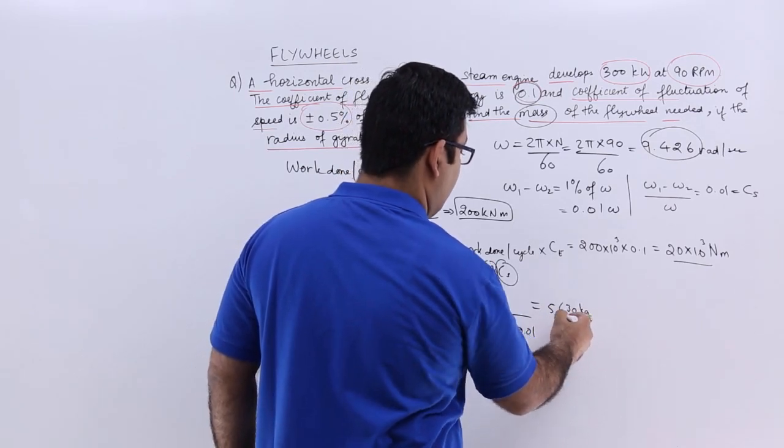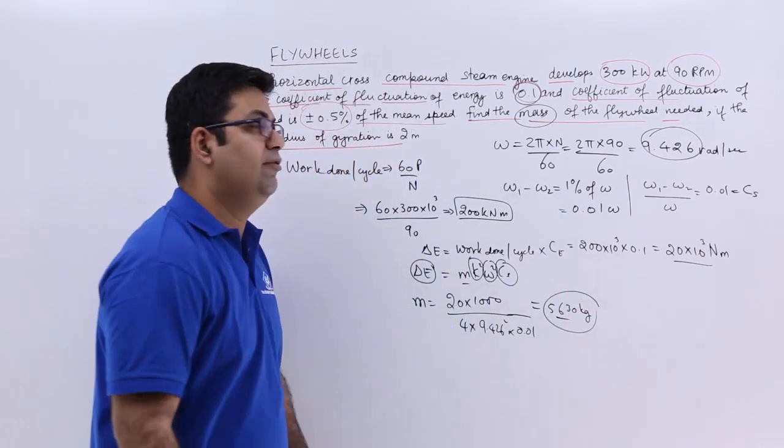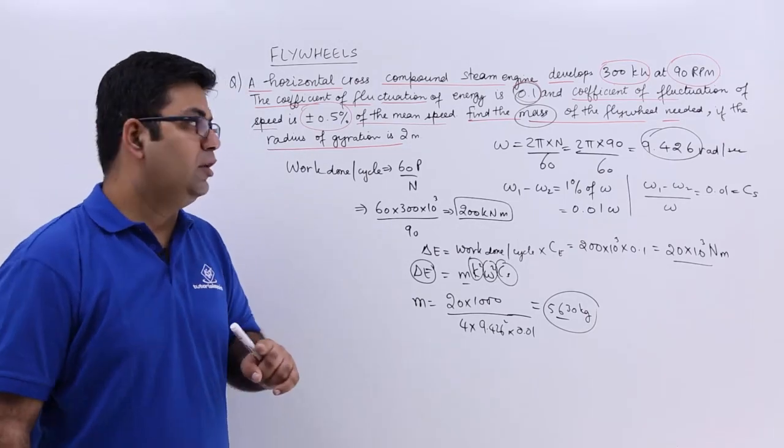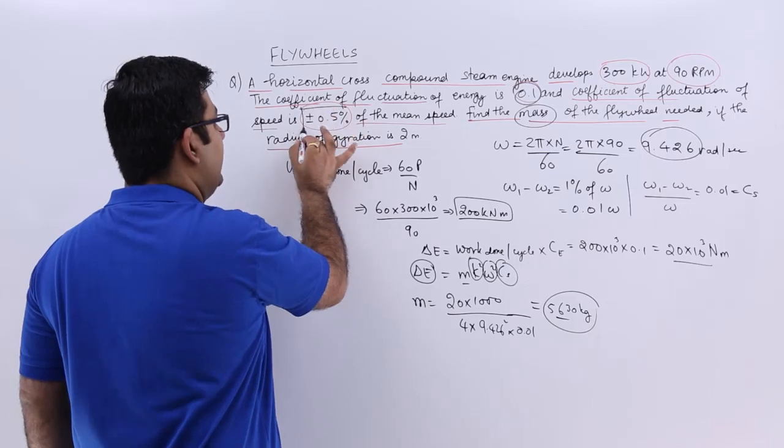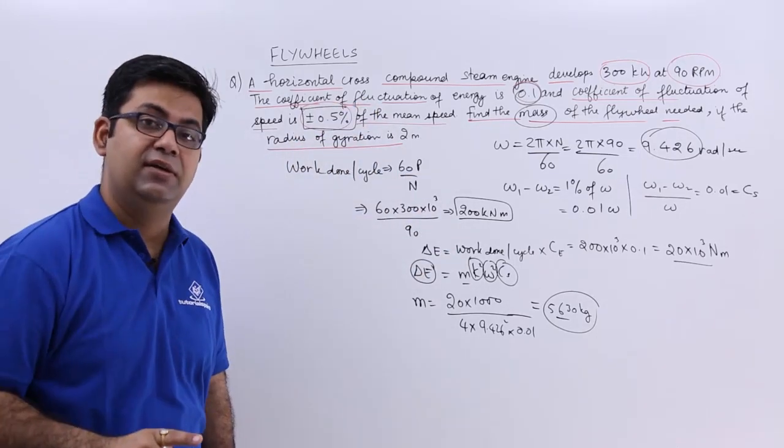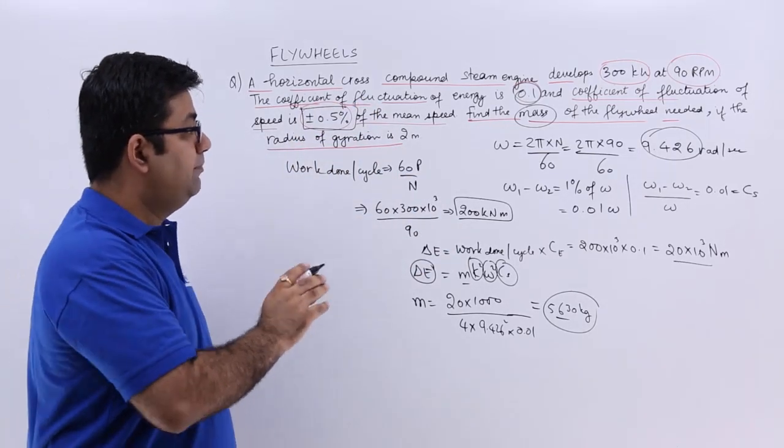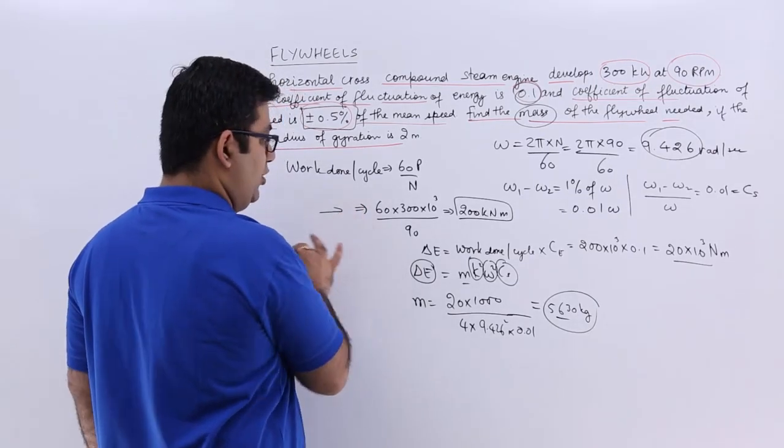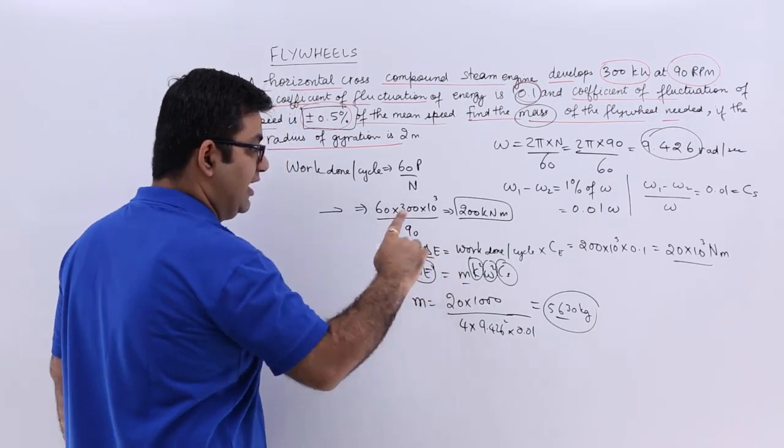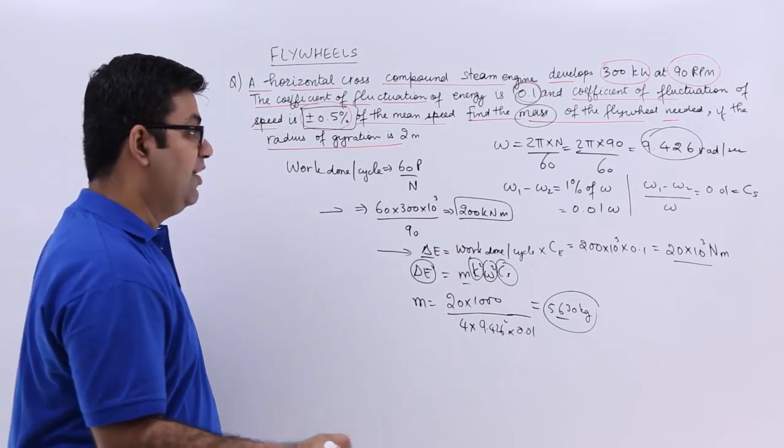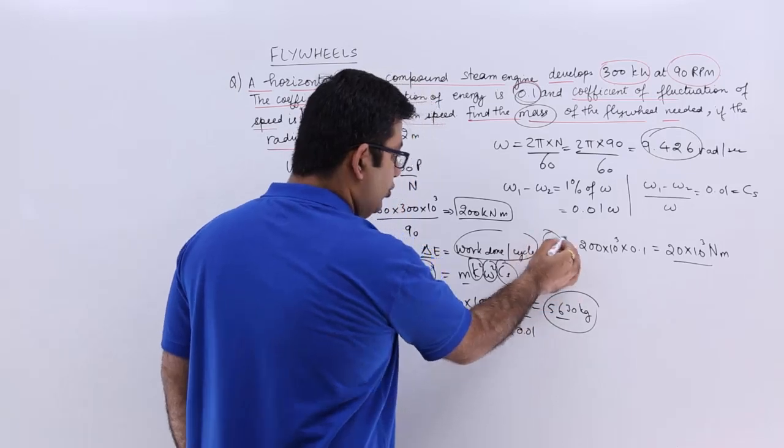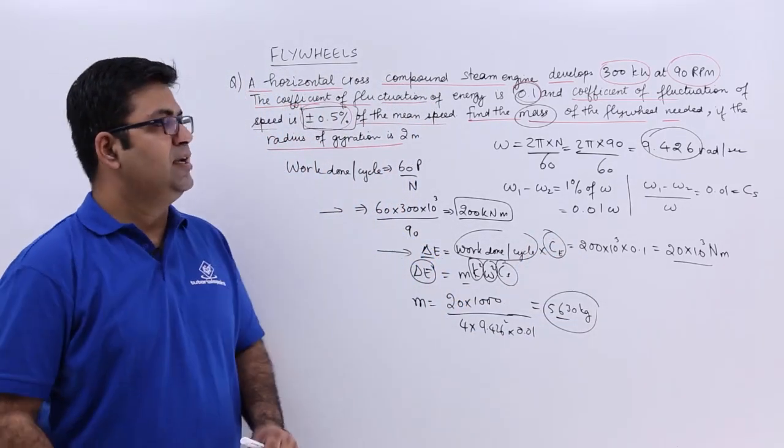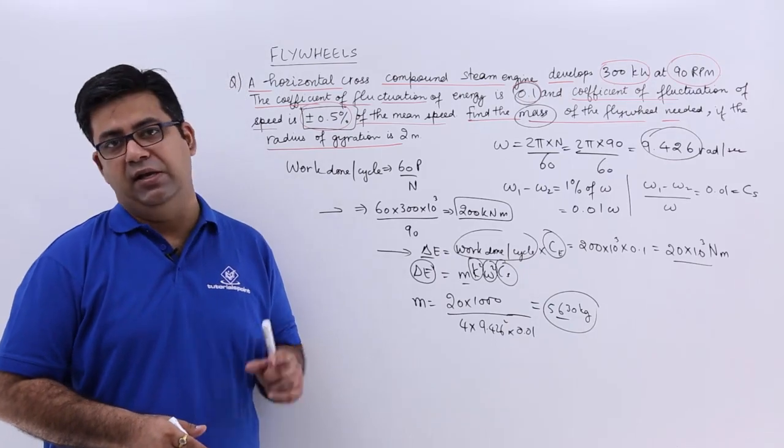The main point to learn here is to look at the coefficient of fluctuation of speed. The rest is simple formula application. You start at this point because this is the basic definition of the change in energy of a flywheel, which is work done per cycle into the coefficient of fluctuation of energy. Now let us move on to question number 3.